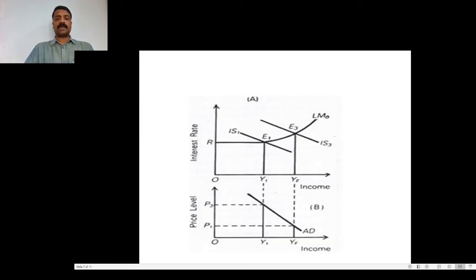Now we look at the IS and LM curves. The IS curve represents the goods market and the LM curve represents the money market. The IS curve intersects the LM curve at point E1, and at that level the income is Y1. The price level is P3.